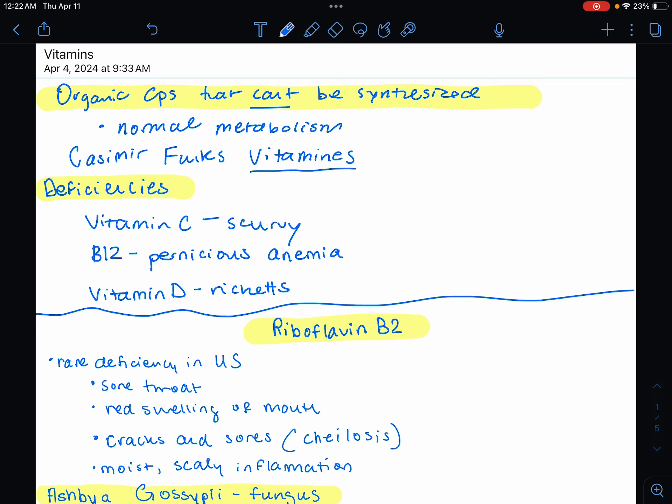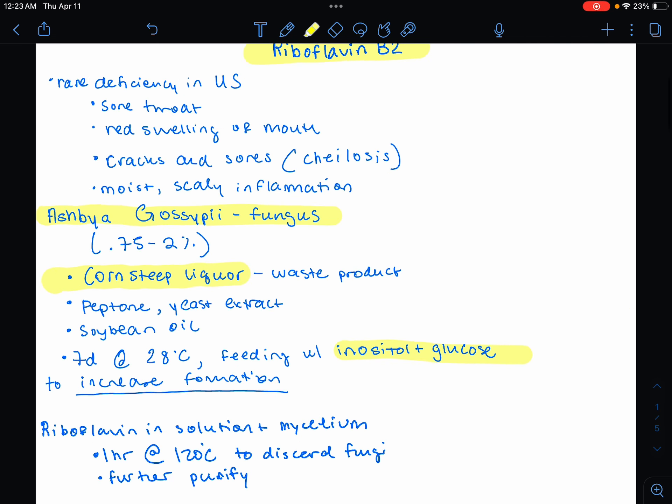If you have a deficiency in vitamins, you could have certain diseases. So vitamin C, scurvy. Think about all the pirates and sailors that had a lot of citrus fruits in that regard. B12 will lead to pernicious anemia. Vitamin D, you could have a deficiency in it, and that's going to be leading to Rickets disease.